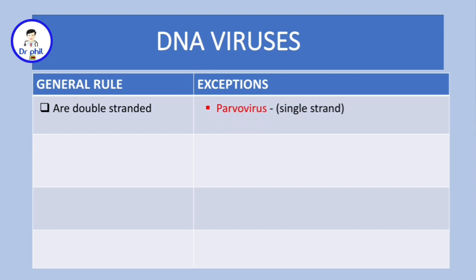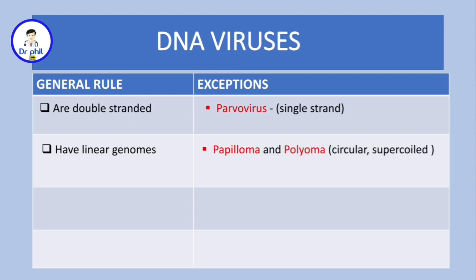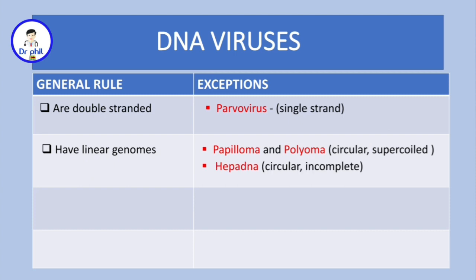Most of the DNA viruses have linear genomes, except papilloma and polyoma — these two are circular and supercoiled. And not forgetting the herpesviruses, this one is circular and incomplete.